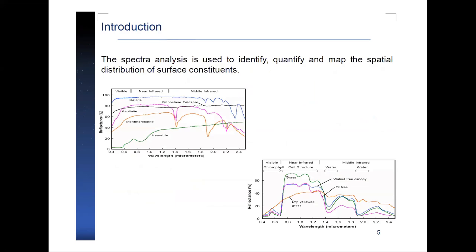The main objective of processing remote sensing data is the restitution of ground truth at a given scale and for a given application. The analysis of observed spectra allows achieving this objective, because spectra allow identification, quantification, and yield a map of the spatial distribution of surface components.